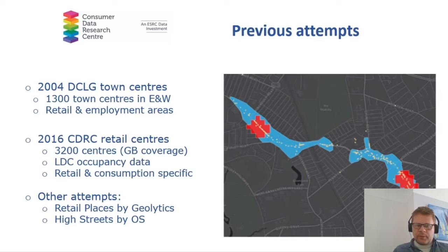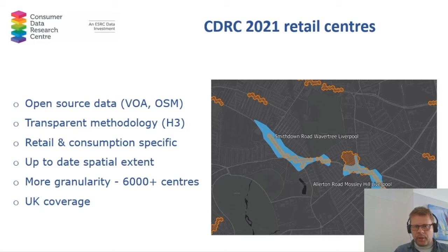It's also important to acknowledge that there are other attempts, which are either licensed — like high streets developed by Ordnance Survey — or commercial products, like retail places developed by Geolytics. Currently, we are working on a new version of those retail centres where we employ open source data only, such as Valuation Office Agency data and OpenStreetMap data. We also use a transparent methodology — this is the H3 spatial grid developed by Uber.